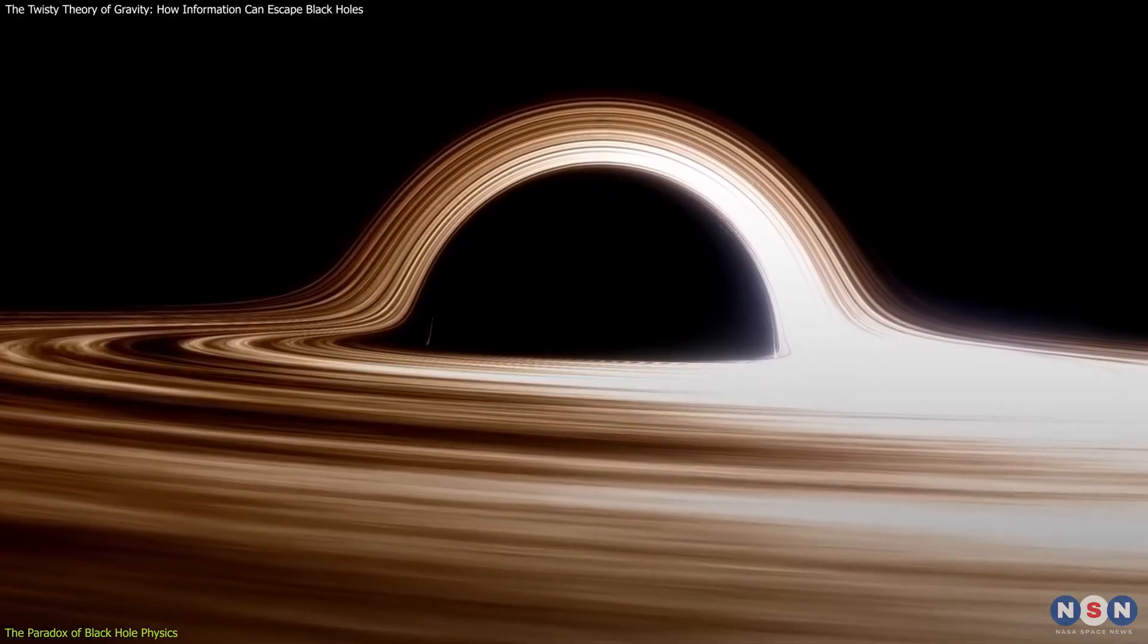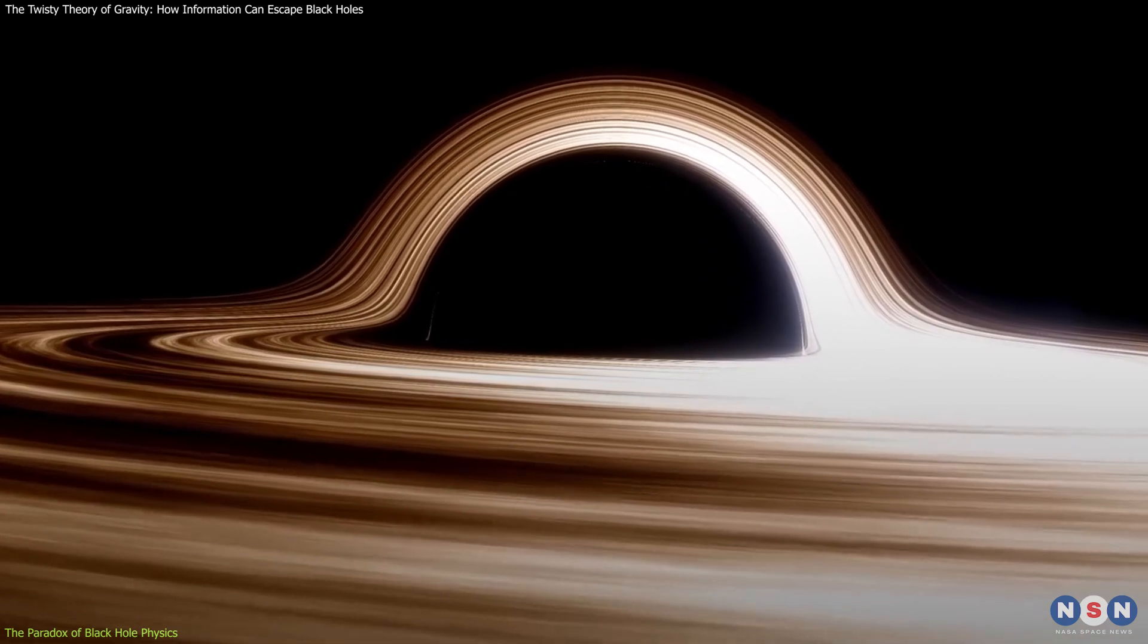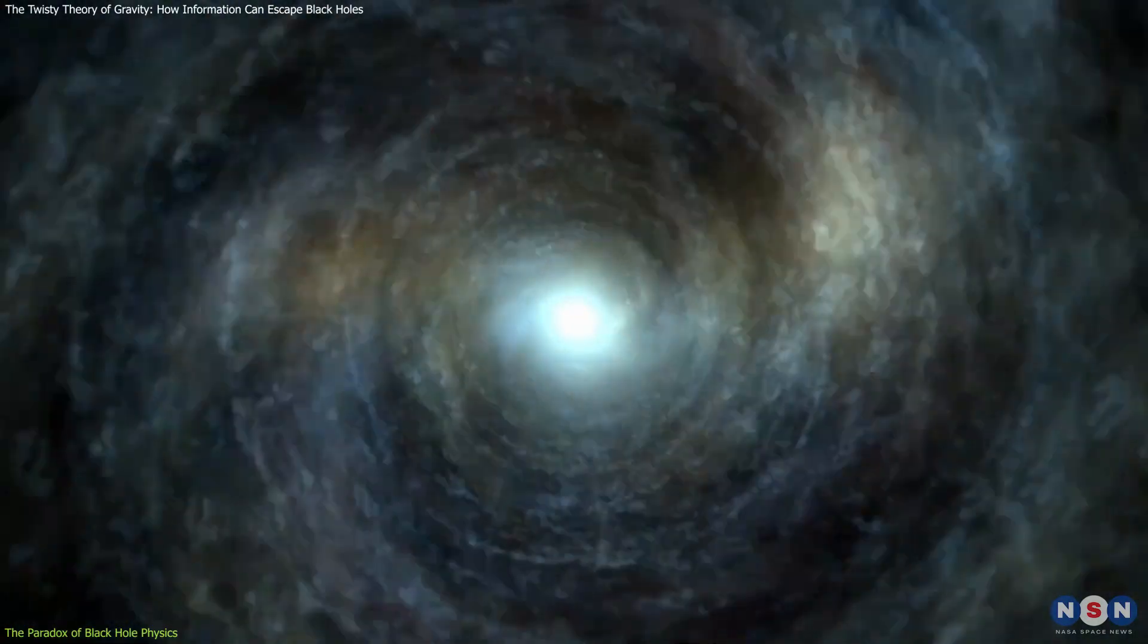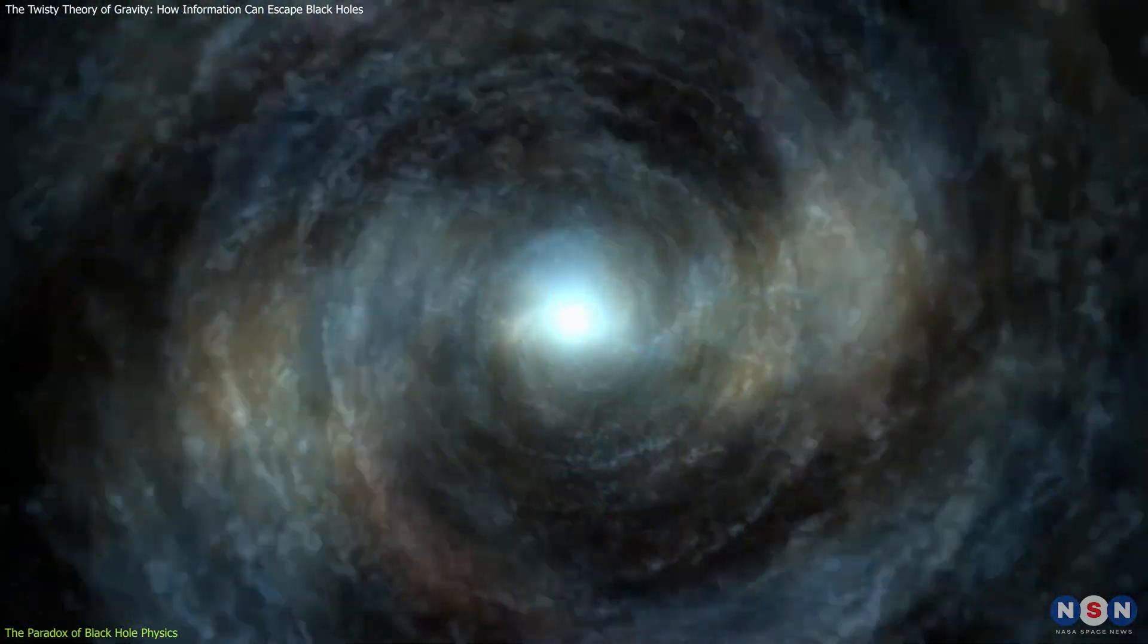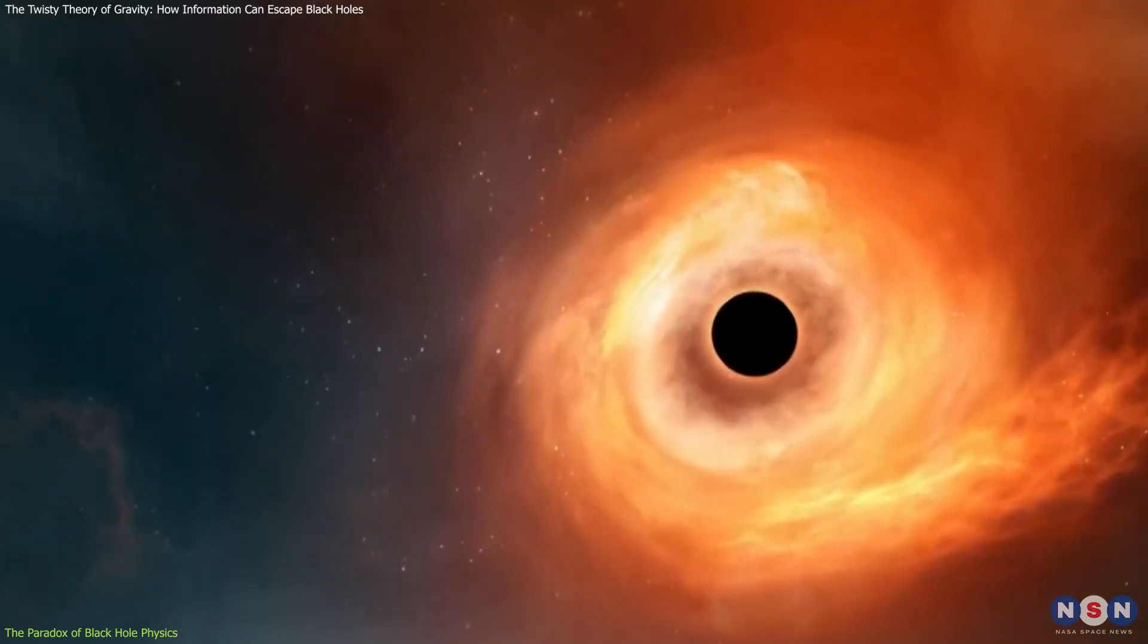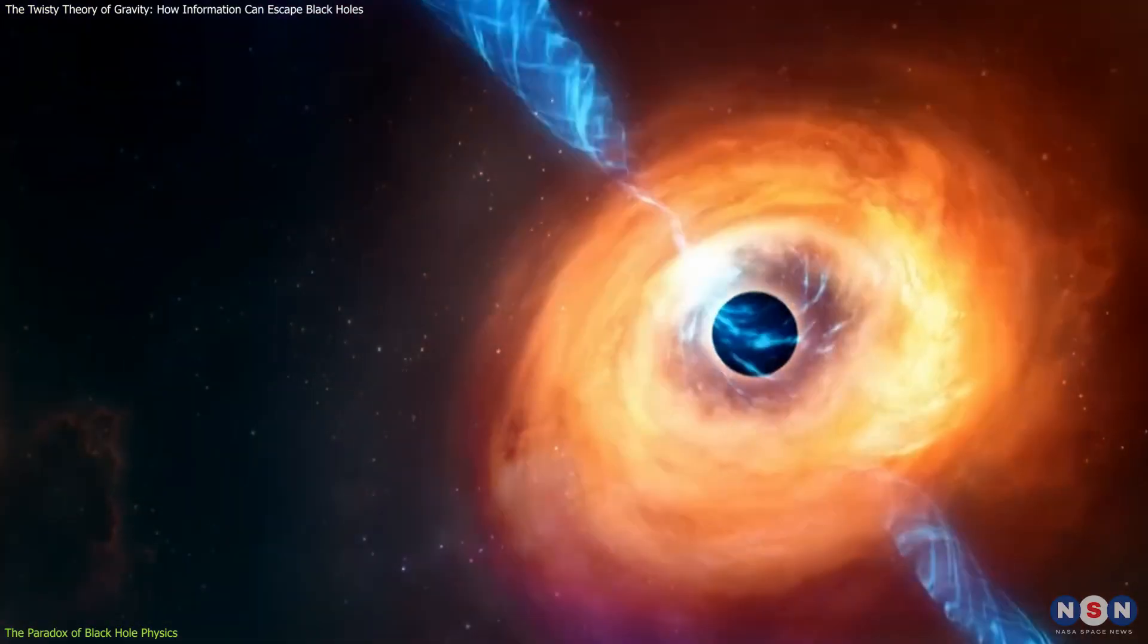and it ensures that physical processes are reversible and predictable. But if black holes destroy information, then they violate unitarity and make physical processes irreversible and unpredictable. This contradiction is known as the black hole information paradox, and it has puzzled physicists for decades.